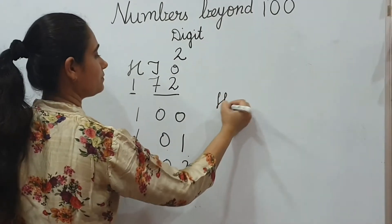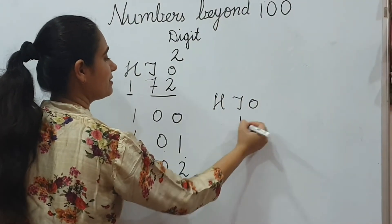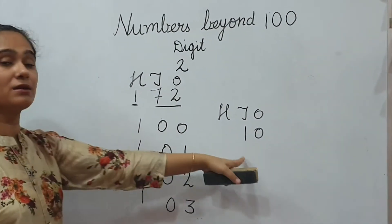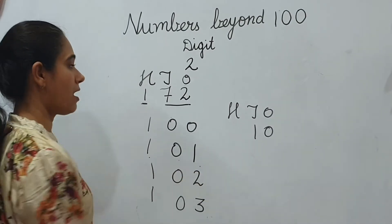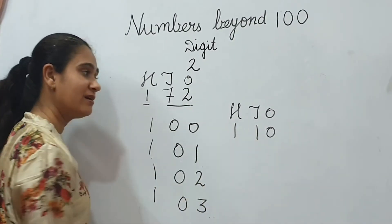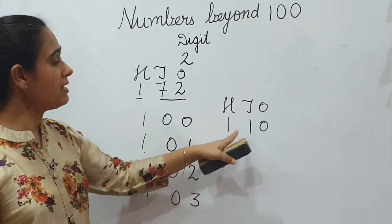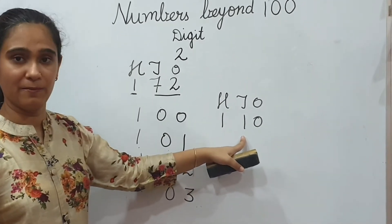Now, I have written 10 here. What it is? 10, 1, 0, 10. If I have written 1 here, what it will become? 110.